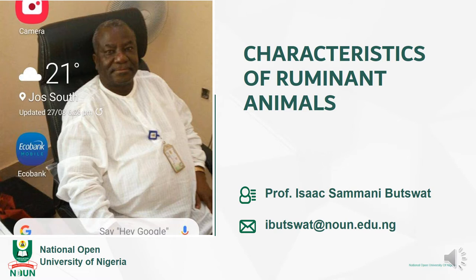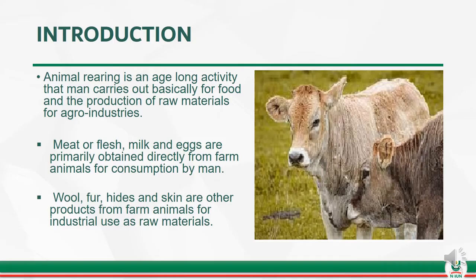We are starting this lecture on characteristics of ruminant animals under the very first module, the very first unit. By way of introduction, animal rearing is an age-long activity that man carries out basically for food and the production of raw materials for agro-industries.